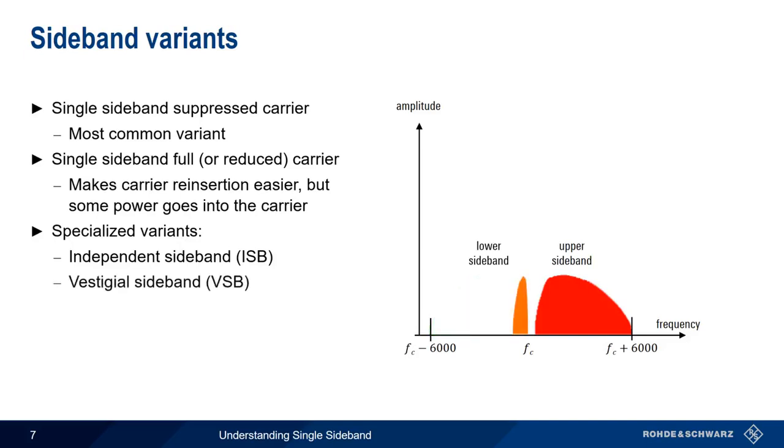In the vestigial sideband variant, both sidebands are present, but one of the sidebands is reduced or limited. This variant was used for older analog television broadcasts.